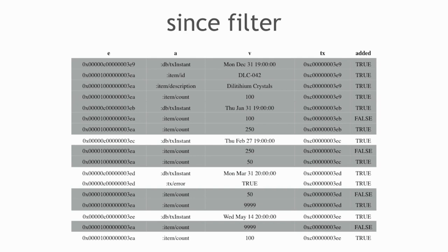You can also look at the since filter, which filters out old stuff and things retracted since then. This filter is a little bit strange because it's going to show you that there are 100 of something — but you filtered out the name of it, because the name got added in the past. The moral of this story is when you're using the since database, you'll often want to join it with another database, because some of the stuff in the distant past is usually the names of things you might actually care about.